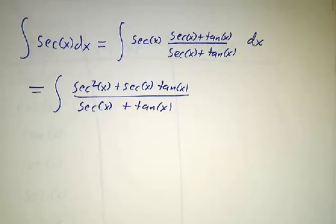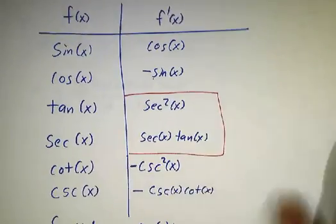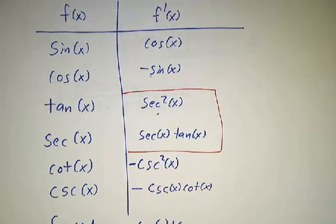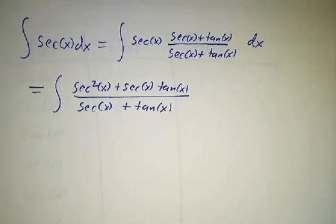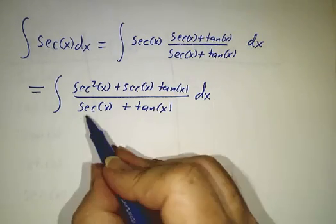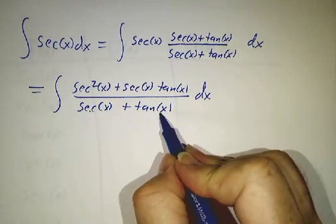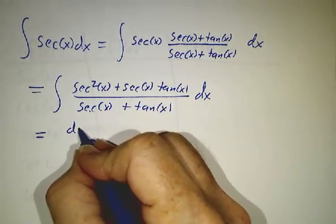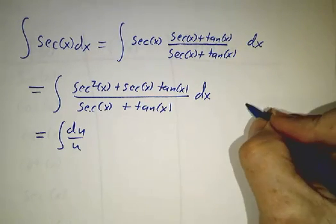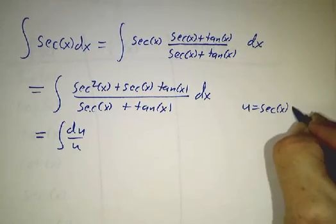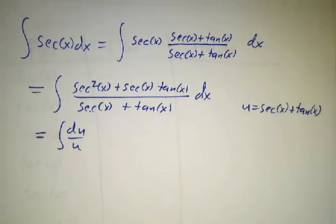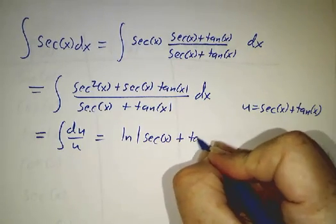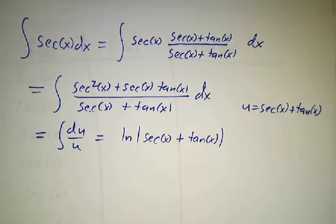Remember our table: the derivative of secant is secant times tangent, and the derivative of tangent is secant squared. So the derivative of the denominator is the numerator — the derivative of secant is secant times tangent, and the derivative of tangent is secant squared. So this is the integral of du over u, where u is secant plus tangent. That gives us the natural log of the absolute value of secant of x plus tangent of x, plus a constant.